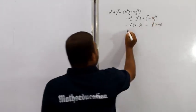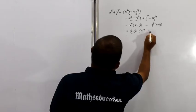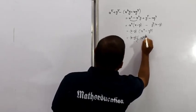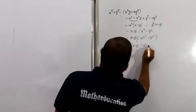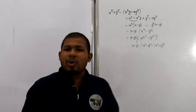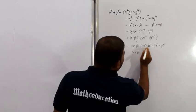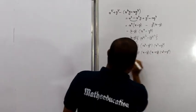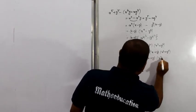We take x minus y as a common factor. Then x to the power 4 minus y to the power 4 can be factored using the a squared minus b squared formula. We get x minus y into x squared minus y squared into x squared plus y squared, which gives x minus y into x plus y into x squared plus y squared, times x minus y — so overall x minus y whole squared, into x plus y into x squared plus y squared.